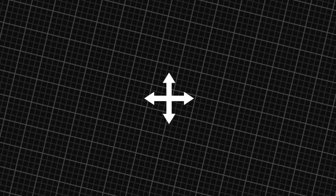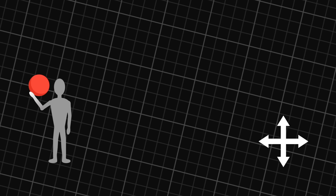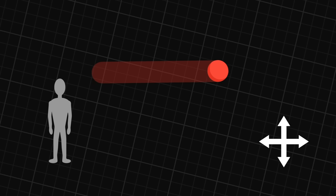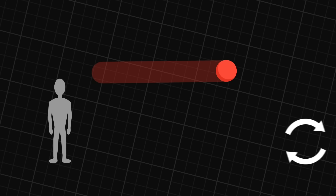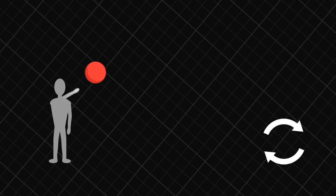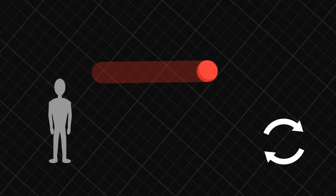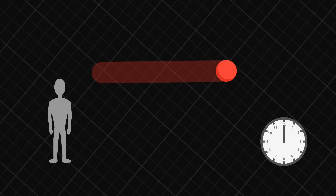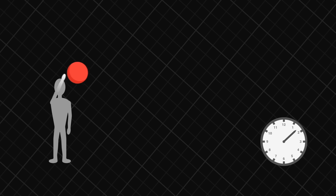We can move through the universe and perform our experiment in another place — the result is always the same. This empty universe also obeys a symmetry under rotations: we could have turned, changed orientation, and the result would have been the same. Finally, this universe is also symmetric through time: we could have waited and thrown the ball a little later. The laws of physics do not change from one instant to the next.